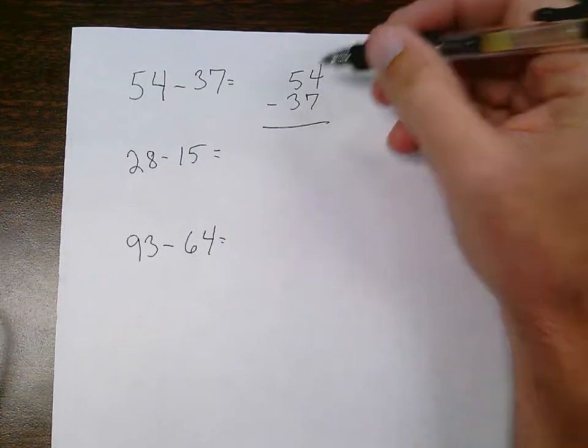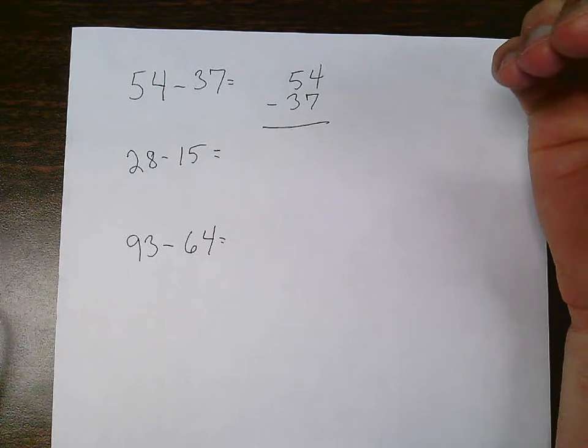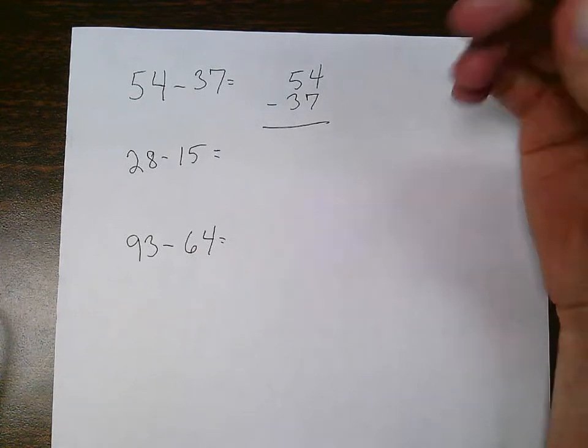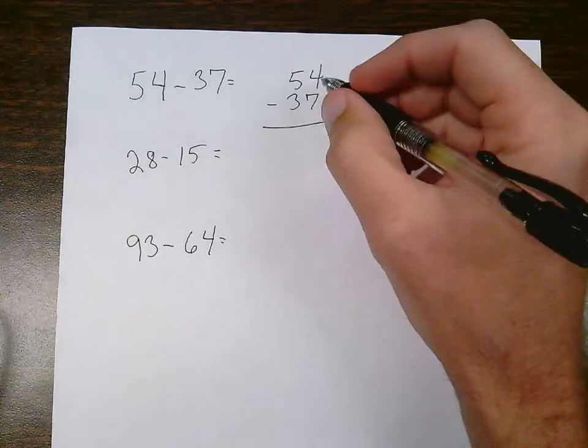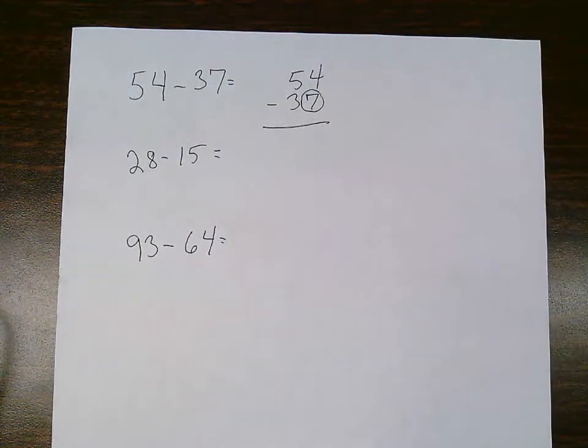So imagine if you had 4 cookies. Could someone possibly take 7 of them from you? The answer to that is no. So whenever my bottom number is bigger than my top number, I can't subtract it. And whenever that happens, I need to borrow.